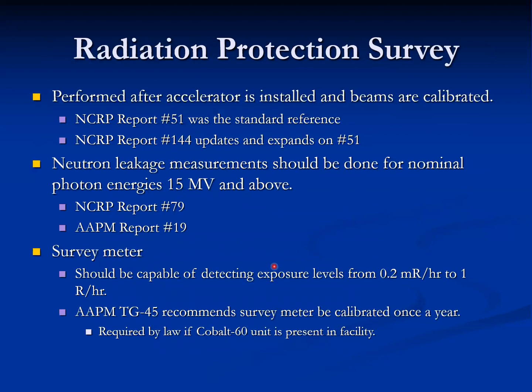Perform a radiation survey before starting the machine. This will also include neutron leakage measurements, which should be done for nominal photon energies of 15 MV or above. The survey meter should be capable of detecting exposure levels from 0.2 mR per hour to 1 mR per hour, and you can follow the relevant reports.